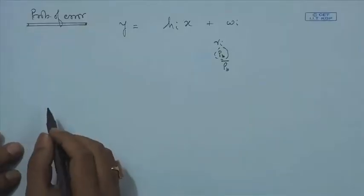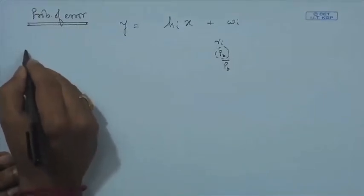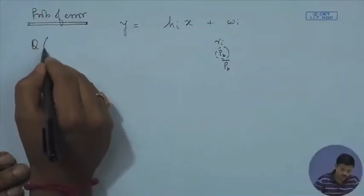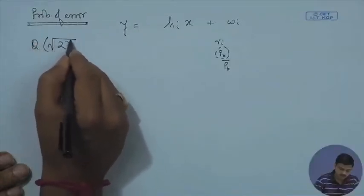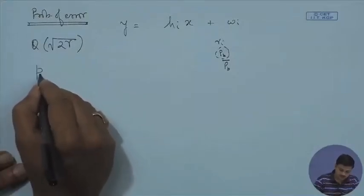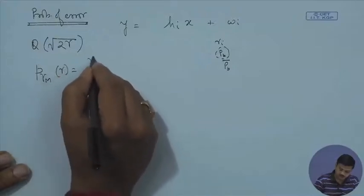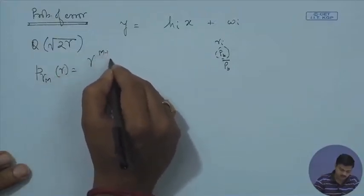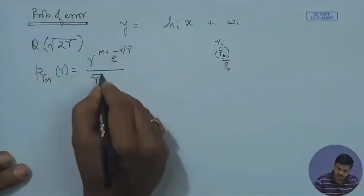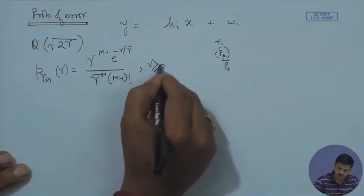For BPSK or QPSK, the error probability is Q(√(2γ)). The combined SNR's PDF is p(gamma) = gamma^(M−1) × e^(−gamma/gamma_bar) / (gamma_bar^M × (M−1)!) for gamma ≥ 0. This holds because gamma = E[x²]/E[w²] × |H|², and since |H|², E[x²], and E[w_i²] are all greater than or equal to zero, gamma ≥ 0.